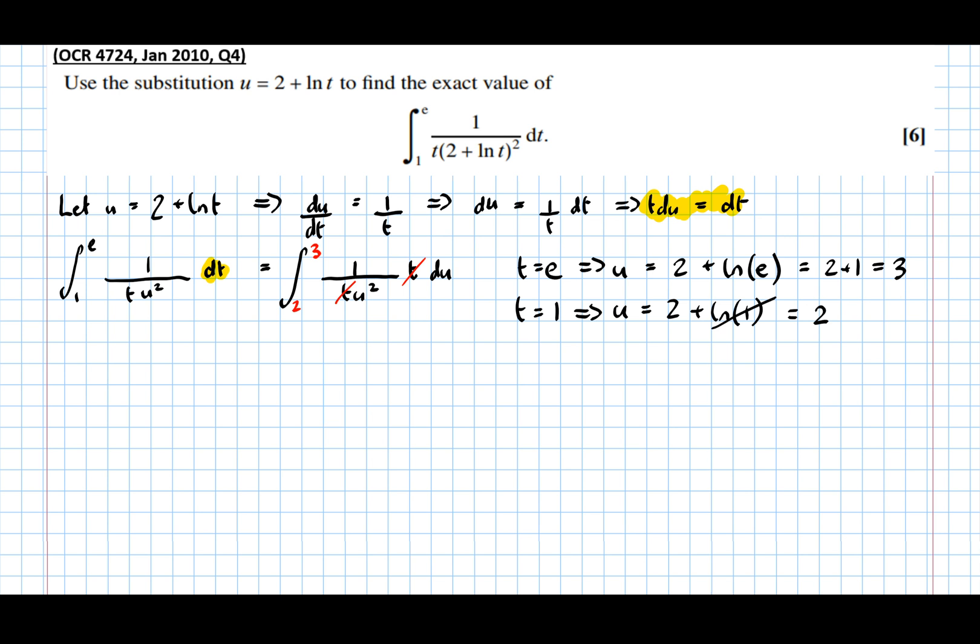So now we can do the integration, the integral between 3 and 2, and 1 over u squared can be better written as u to the power of minus 2 du. Which means that if we add 1 to the power, it becomes u to the minus 1 over minus 1, between 3 and 2, which is simply negative of u to the minus 1, between 3 and 2.